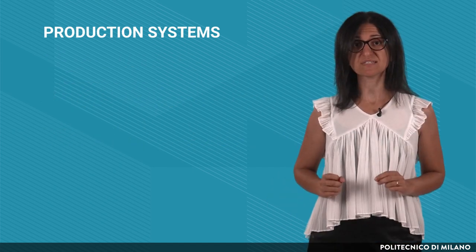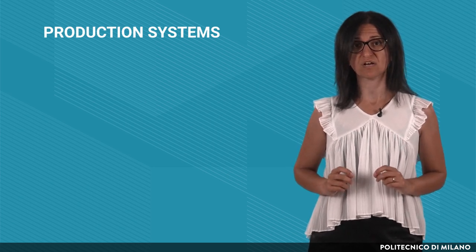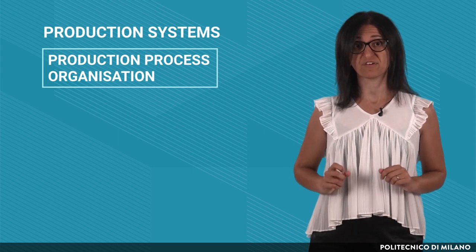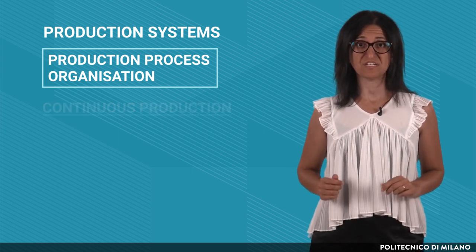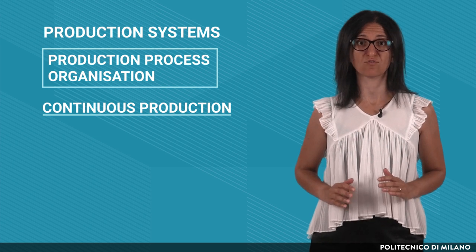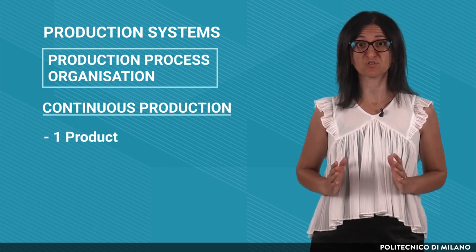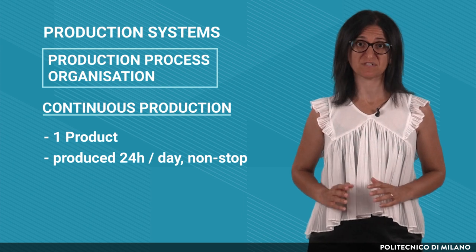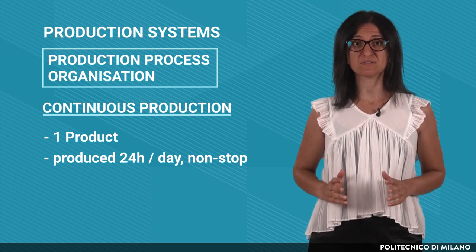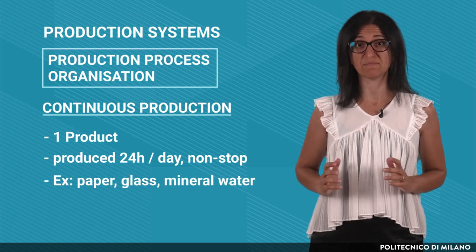Production systems can also be classified based on how the production process is organized. We can have three solutions. Continuous production: the production system is devoted to just one product that is usually produced 24 hours per day without stops. Some examples are the production of paper, glass and mineral water.